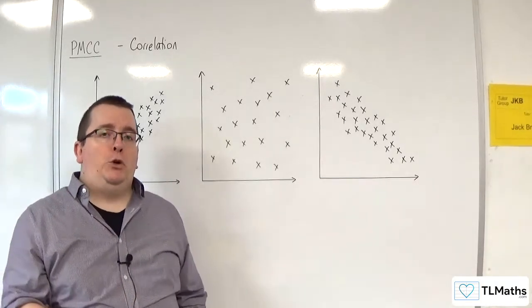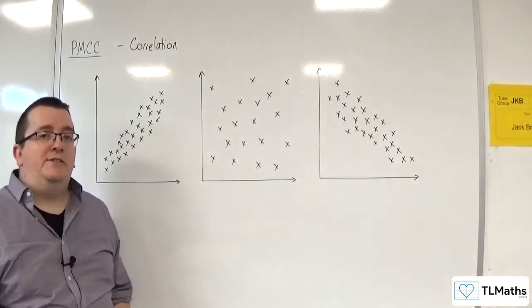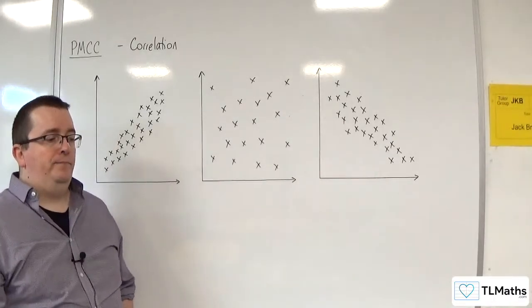So correlation is talking solely about how close the data is to a straight line.